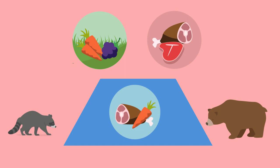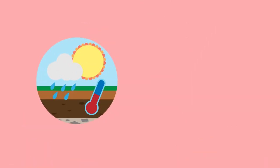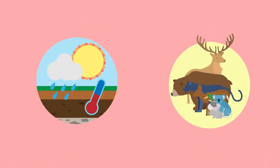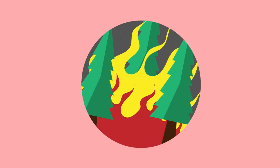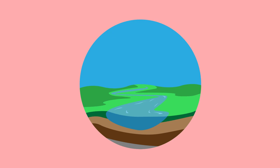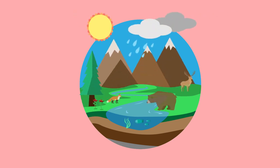Interactions within an ecosystem can also occur between abiotic and biotic components. One great example of this is when weather patterns like thunderstorms cause forest fires and alter the habitats of the organisms living within the forest. While not always the case, interactions between ecosystem components are often great catalysts for evolution. But that's a topic for another video.